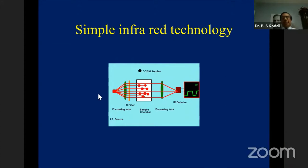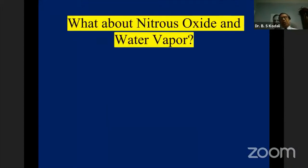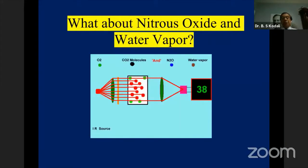CO2 is a polyatomic gas that absorbs infrared light at 4.3 millimicrons — that is the wavelength where CO2 molecules absorb. Nitrous oxide and water vapor, also administered during anesthesia, are also polyatomic gases and absorb infrared light as well. Therefore, many monitors provide automatic corrections for the errors produced by nitrous oxide and water vapor.